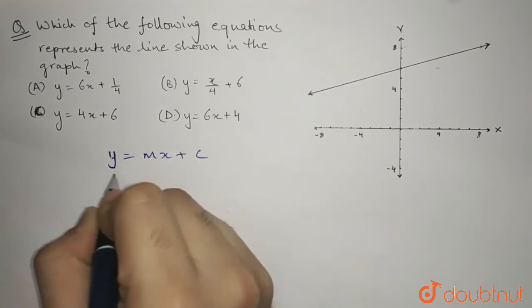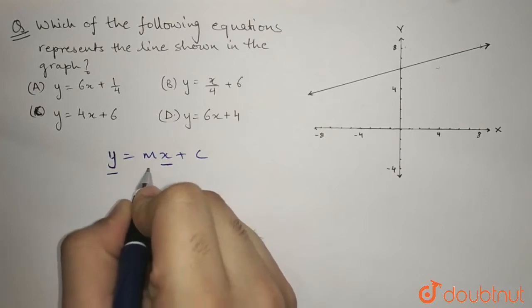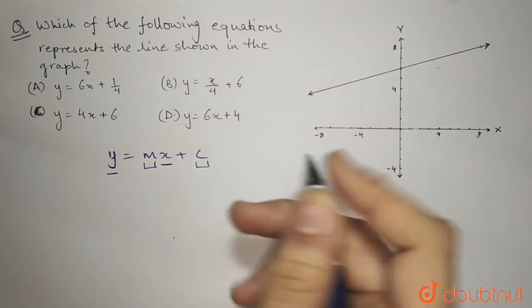Here x is the independent variable, y is the dependent variable, whereas m is the slope and c is the y intercept of the line.